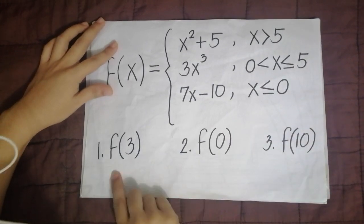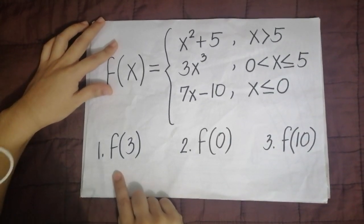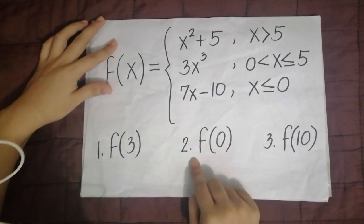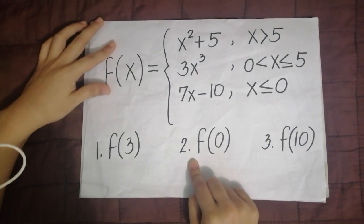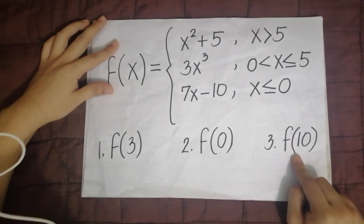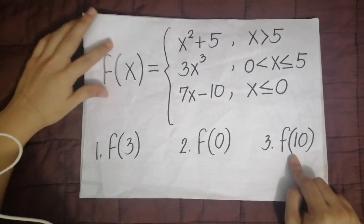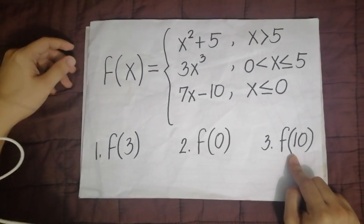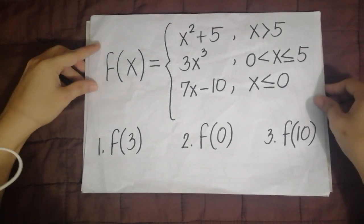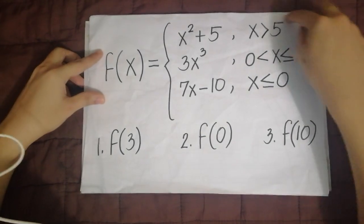So let's evaluate these. Number 1: f of 3. Number 2: f of 0. Number 3: f of 10. So the first thing that you must know here is what is the meaning of this restriction that we see beside each equation or expression.